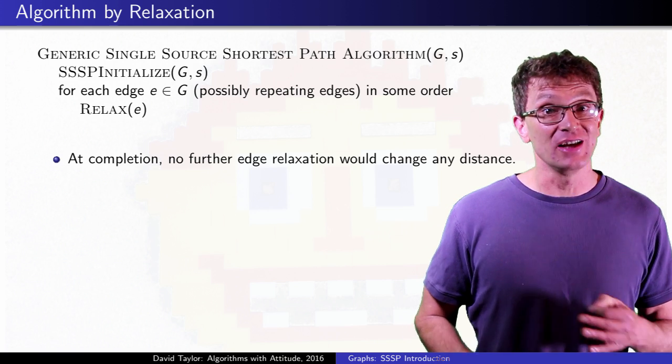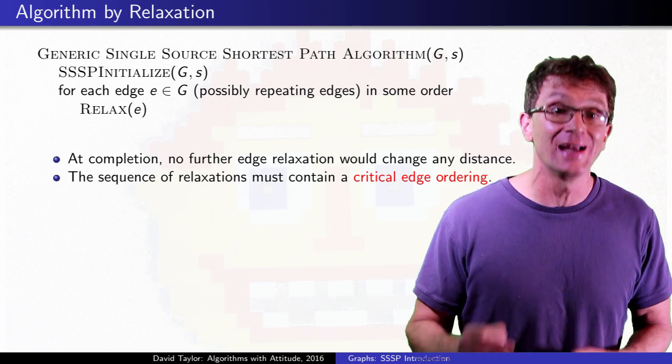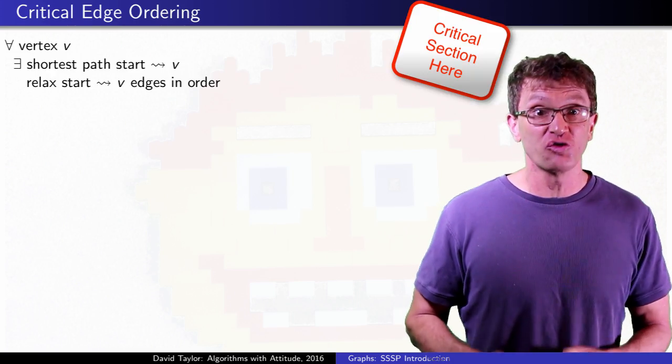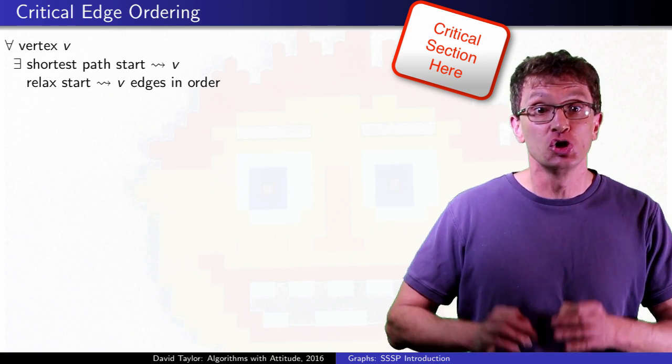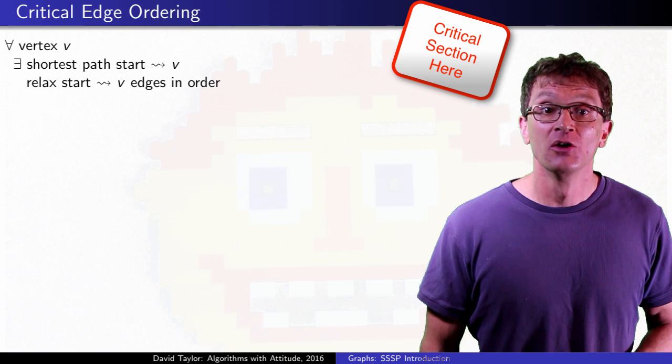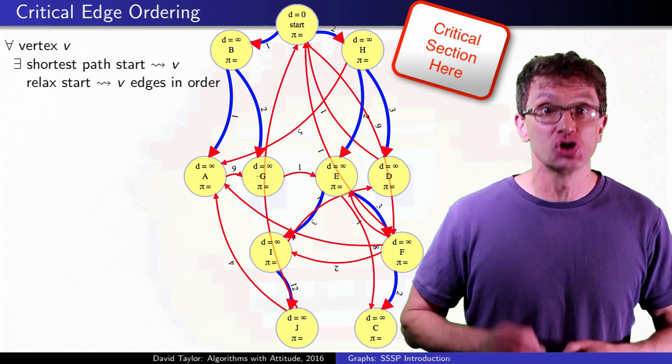That will happen if the edge relaxations contain what I call a critical edge ordering. That's an ordering of edges that contains, in order, edges from a shortest path to each vertex in the graph from the start vertex. So, in this graph, the blue edges really do make up a shortest path tree.